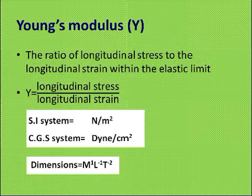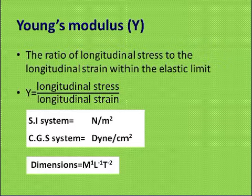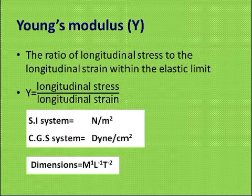What is longitudinal stress and longitudinal strain? When the change is along the length, we call it a longitudinal change. So the stress applied here is longitudinal stress to longitudinal strain. The SI unit is Newton per meter square, the CGS unit is dyne per centimeter square, and the dimension is M to the power 1, L to the power minus 1, T to the power minus 2.